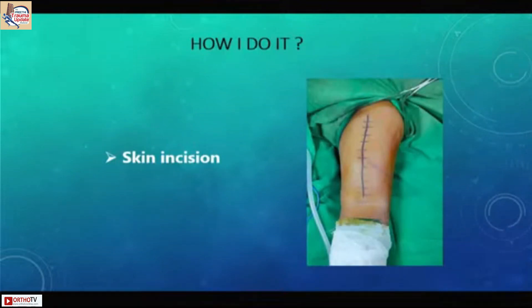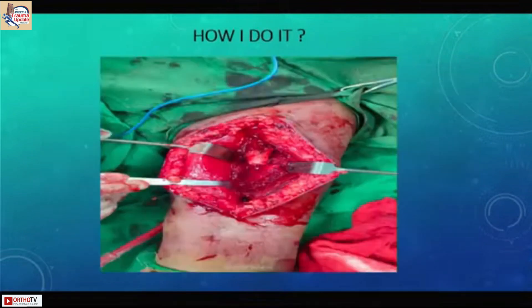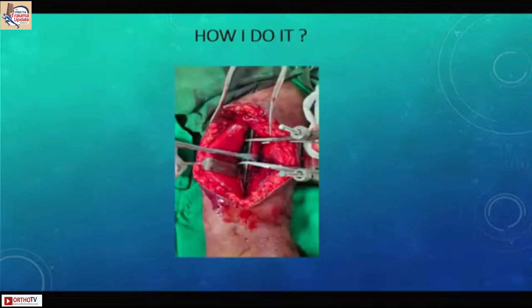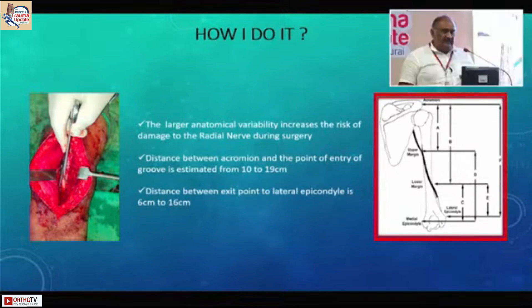For my technique, I make a simple skin incision — as demonstrated by my colleague Devendra — retract the biceps medially, split the brachialis, expose the fracture site, clamp it, and fix it. When you want to visualize the radial nerve you should be very careful retracting distally where it crosses from medial to lateral. Use retractors carefully, use clamps carefully, and always keep the clamp very close to the bone.